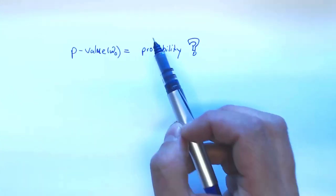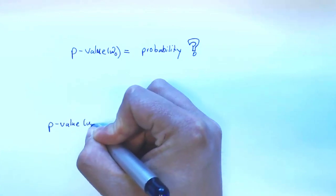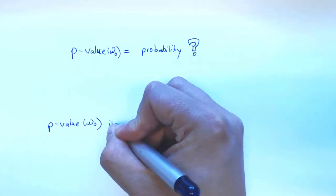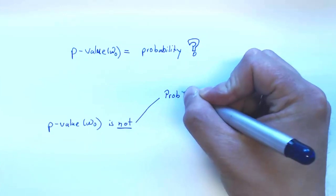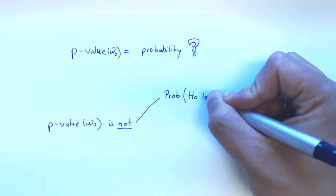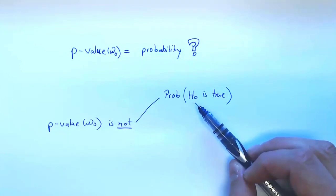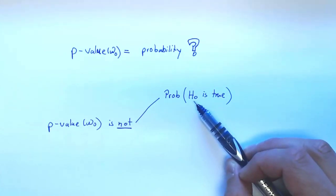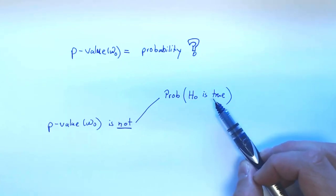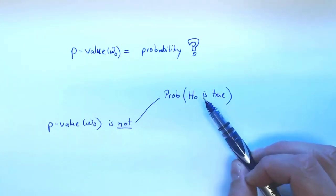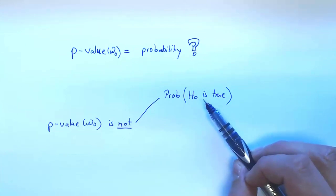Nothing good can come from thinking of a p-value as a probability. In particular, the realized p-value is not the probability that H-naught is true. In the statistical approach we are following, whether a hypothesis is true or not is determined by the population — it's not random. There's no uncertainty about it; we don't know whether it's true, but the truth of H-naught in the population model is unambiguous and deterministic.